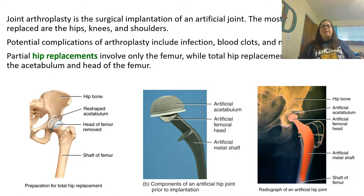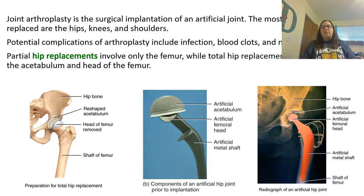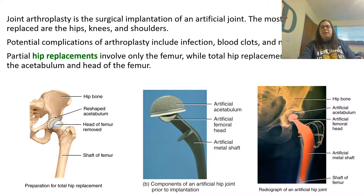When we talk about joint arthroplasty, this is a surgical implantation of an artificial joint. The most common joints replaced are your hips, knees, and shoulders. Potential complications include infections, blood clots, and even nerve damage. This here shows a hip replacement involving only the femur — that would be a partial hip replacement. A total hip replacement involves replacing the acetabulum, which is part of the coxal bone, and the head of the femur. They remove the head of the femur and implant a new device, replacing the joint.